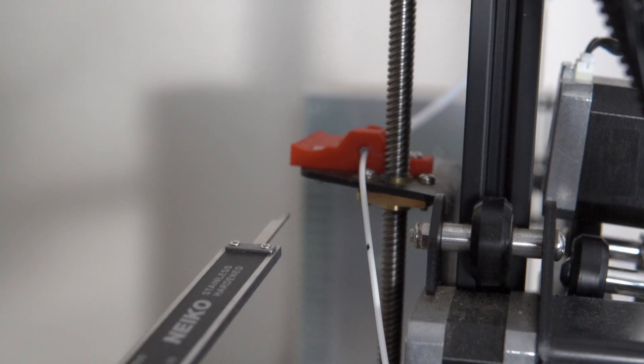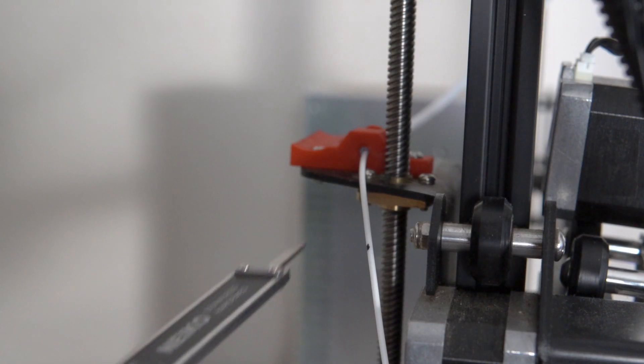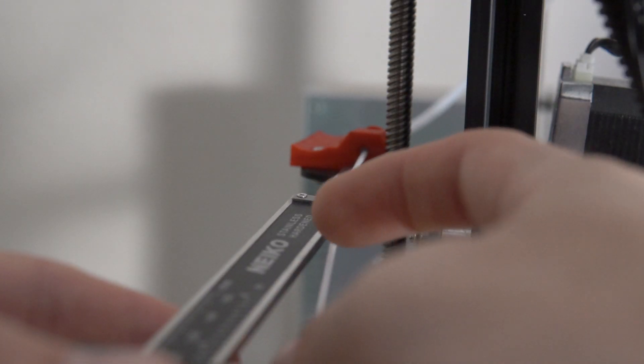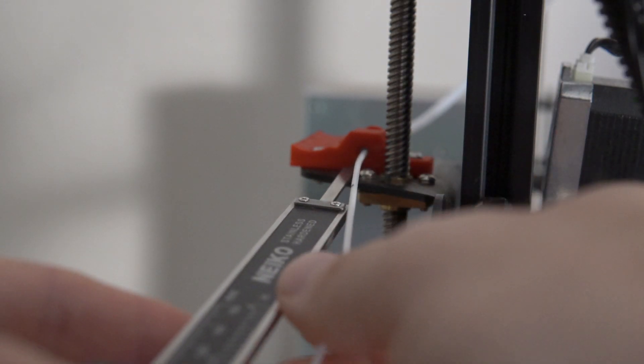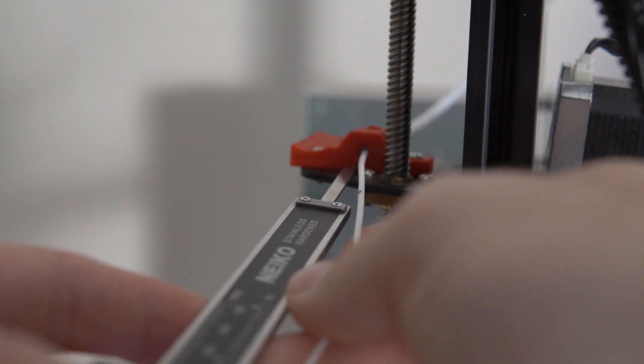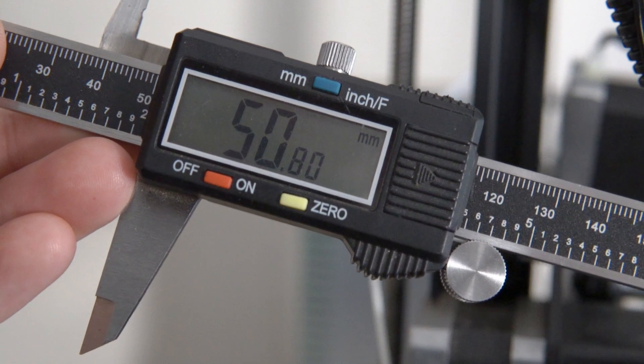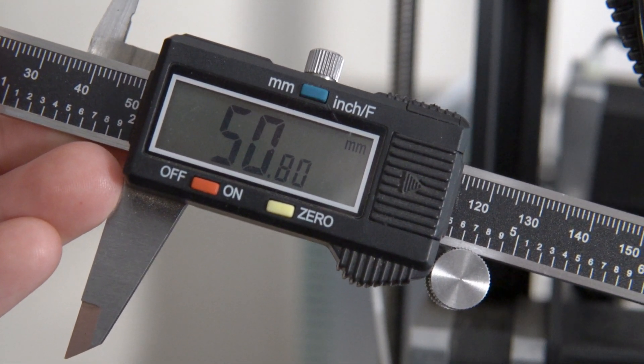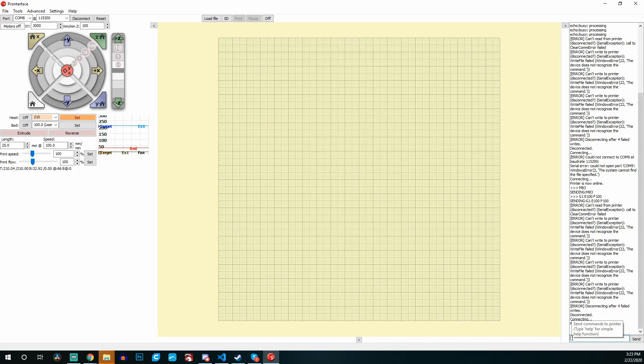Once this is done, grab your digital calipers and just like we measured before at 120, we're going to measure to see how much is left. If all is correct with your extruder, it should be at 20 millimeters since we told it to extrude 100 and marked it at 120. In mine, there's 50 millimeters left over, which clearly shows mine is severely under-extruding, which is what I expected because I just changed my extruder.